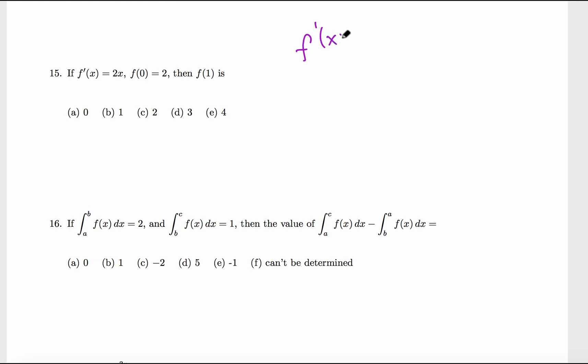The derivative is given as 2x. To recover the function, we integrate both sides. If we integrate, then we get f(x) back. Anti-derivative of 2x is x² because derivative of x² is 2x, and plus c is always there.